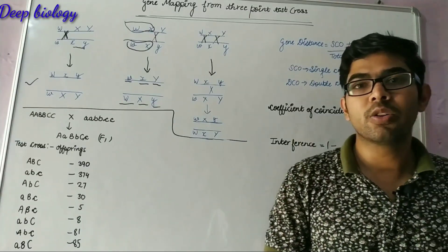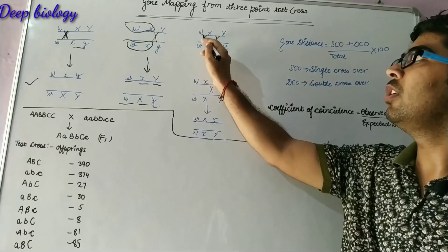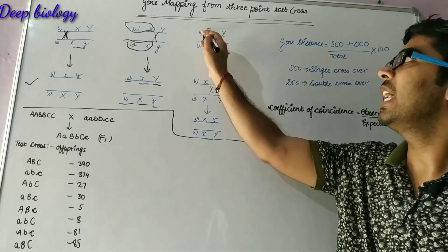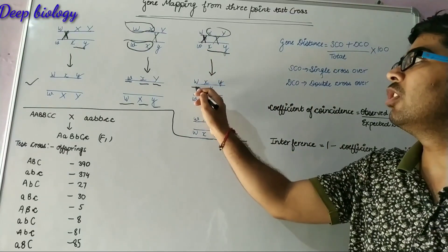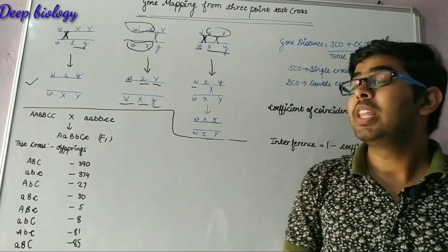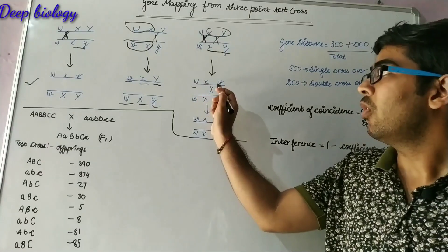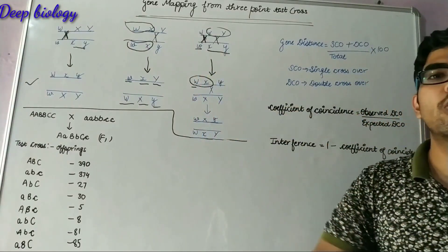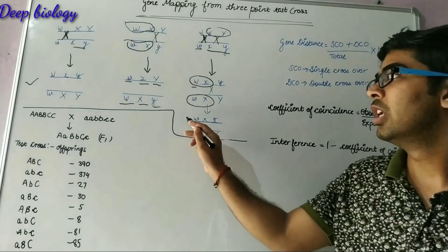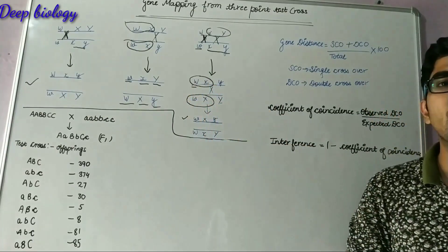In the case of double crossover, two crossovers occur side by side. When crossover occurs between the W and X region, small x and small y are swapped with capital X and capital Y, giving capital W, small x, small y and small w, capital X, capital Y. Then another crossing over occurs between X and Y, and capital W with small x is swapped with small w and capital X, giving small w, capital X, small y and capital W, small x, capital Y.